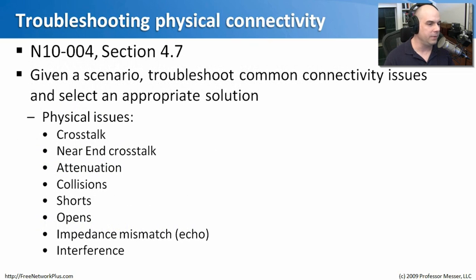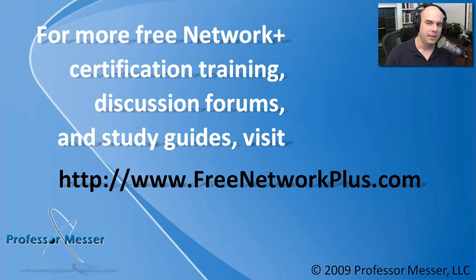Well, that goes through a lot of different troubleshooting physical connectivity issues. Our crosstalk, near-end crosstalk, we talked about collisions and opens and impedance mismatches. And at this point, you should have a pretty good idea of the types of things you should look for whenever you're trying to troubleshoot these physical issues. Thanks for joining us in this module. If you'd like to see many more of our videos, come to our message boards and communicate with other people that are looking at our Network Plus certifications, or if you just want to send me a message, you can visit our website, freenetworkplus.com.